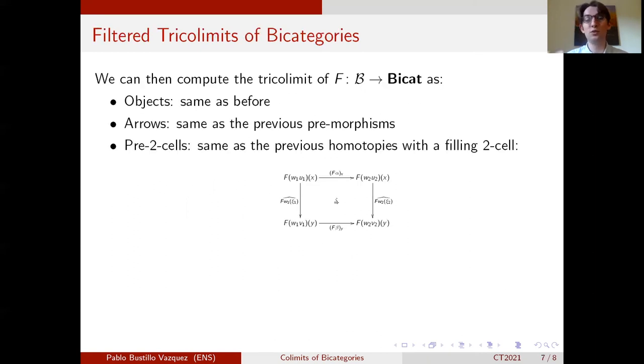And hence we just have to use Pronk's formula of bicategories of fractions and Buckley's formula for the Grothendieck construction of trihomomorphism. And we can get a formula for the filtered tricolimits of bicategories. This formula follows the same pattern as the one we had before, so the objects are also elements, the arrows are the same description exactly.